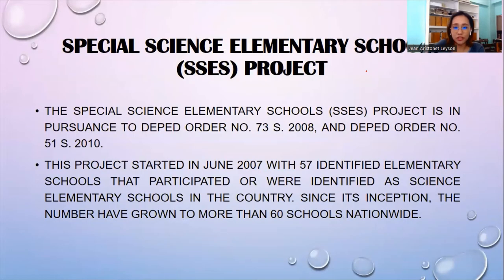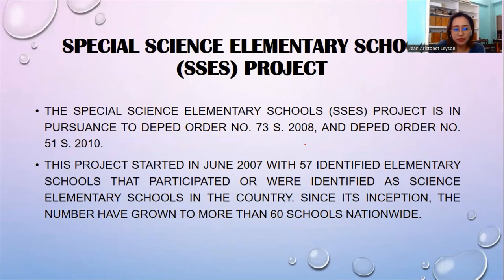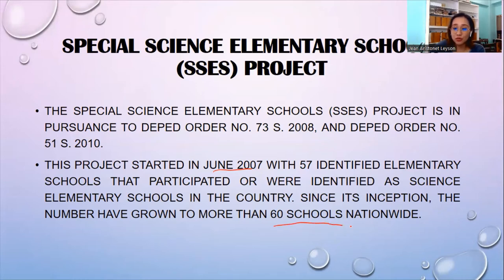Next, we have Special Science Elementary Schools or the SSES project. The Special Science Elementary Schools project is in pursuance to DepEd Order No. 73 Series of 2008 and DepEd Order No. 51 Series of 2010. This project started in June 2007 with 57 identified elementary schools that participated as science elementary schools in the country. Since its inception, members have grown to more than 60 schools nationwide.